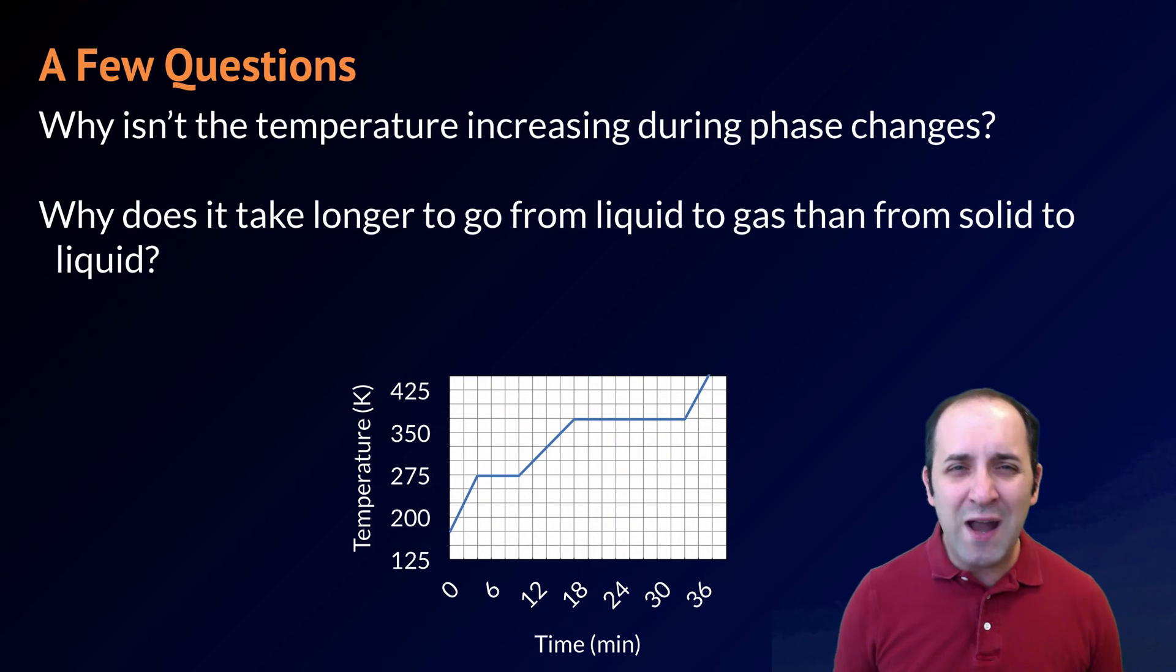The next question I have is, why does it take so much longer to go from a liquid to a gas than it does from a solid to a liquid? If you look at the length of the lines, you can see that our liquid to gas phase change is considerably longer than our solid to liquid phase change. My question to you is, why is that?